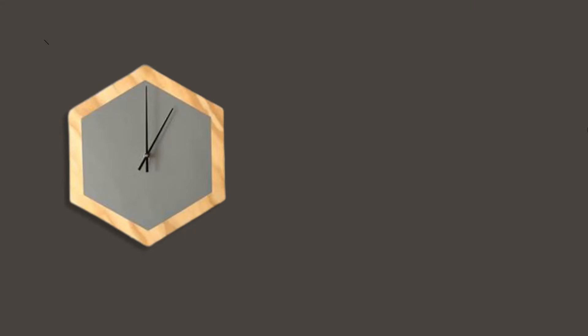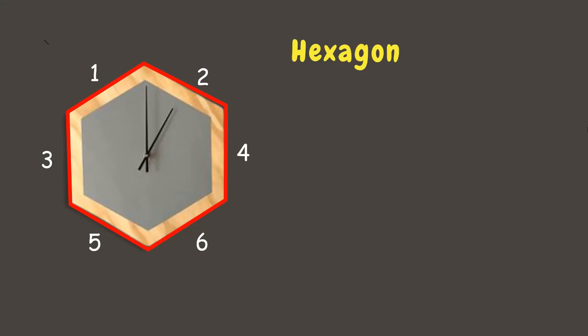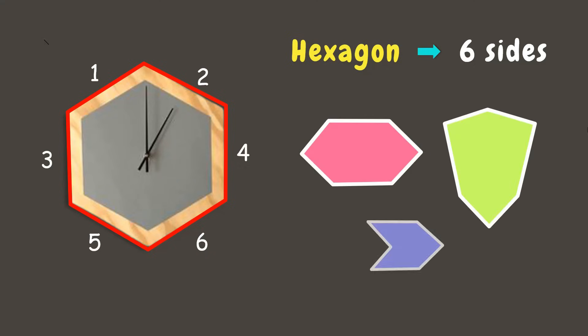Let's go to the next one. We have a clock. This clock has six sides and a polygon with six sides is called a hexagon. A hexagon is a polygon with six sides and six angles. Here are other examples of hexagon.